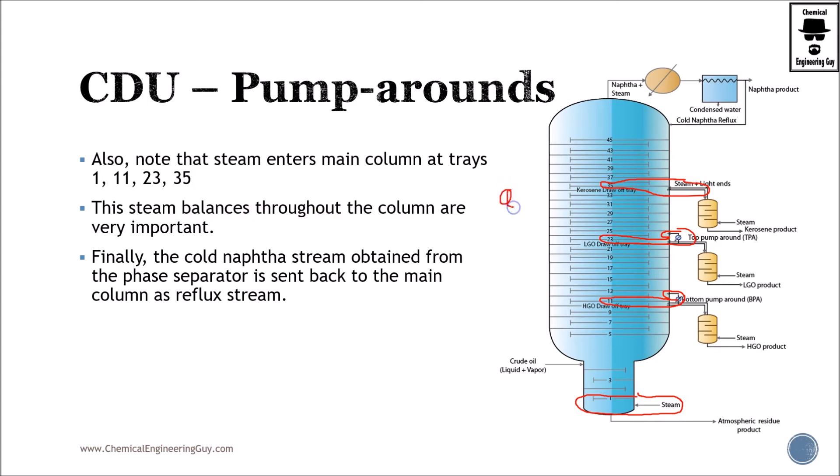Finally, the cold naphtha stream is obtained from the phase separator. So actually we get hot naphtha, we cool it down, we condense waters, we get off the gases, and we get the stabilized naphtha as final product and as a recycling stream.